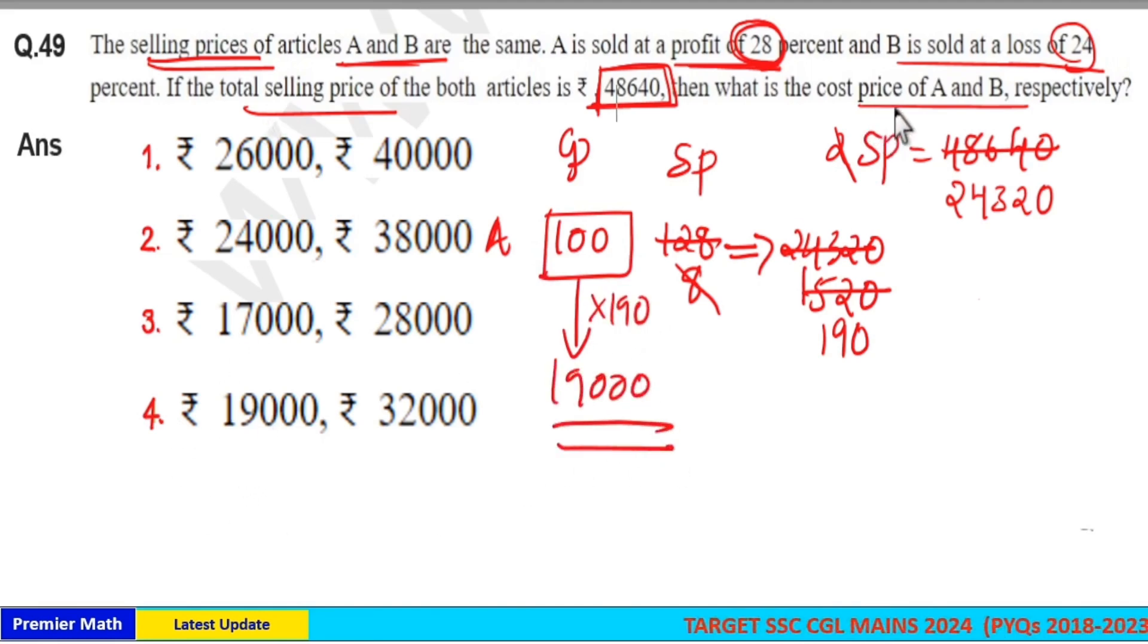If you look at the options here, we need cost price of A and B. First one is A, so 19,000 means option 4 is your answer. Cost price of A is 19,000.